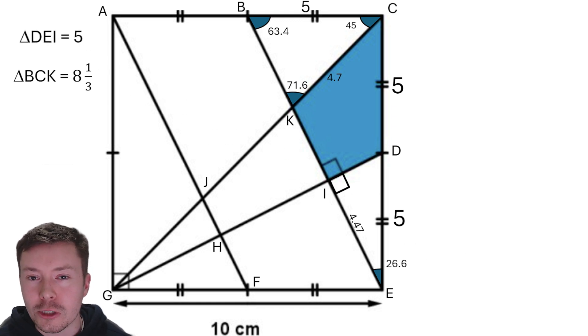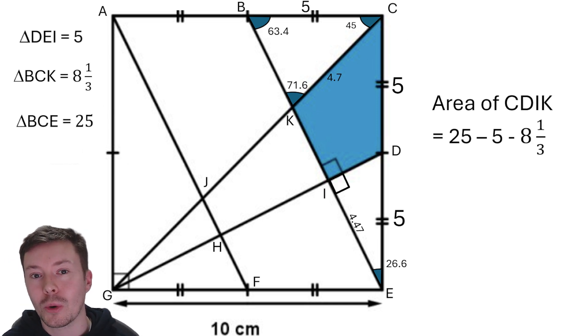I don't know why I say that's good, I just feel like it's good that it's an exact value. It feels nicer. Now I then need to work out the area of triangle B, C, E. That area is a half times 10, which is the height, times the width, which is 5, gives again another nice answer, exact value of 25. From there, it should be pretty easy to get this blue area now, because I'm going to do 25 minus the area of DEI, which is 5, minus the area of BCK, which is 8 and a third, gives an area of 11 and two thirds centimeters squared.